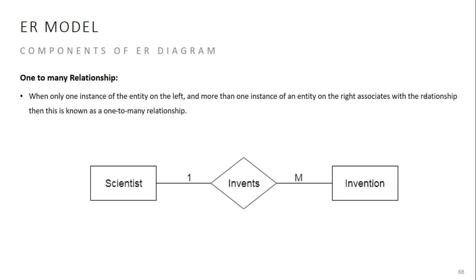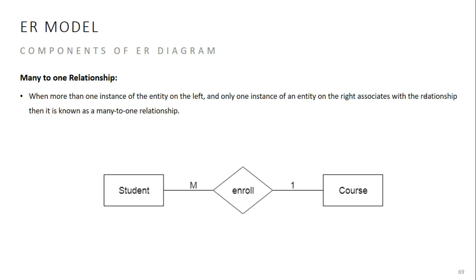Many-to-one relationship is the opposite of one-to-many. On the left-hand side we have many, and on the right-hand side we have one. For example, many students can enroll in one course — that is a many-to-one relationship.